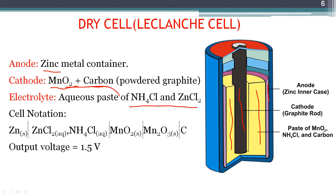To summarize the key components: zinc anode, graphite cathode, and a paste of manganese dioxide, ammonium chloride, and zinc chloride used as the electrolyte in this dry cell. In the cell notation, the zinc anode is oxidized to Zn²⁺. Ammonium chloride does not take part in the electrochemical reaction. Manganese dioxide, where manganese is in the +4 oxidation state, is converted to manganese oxide with manganese in the +3 oxidation state.